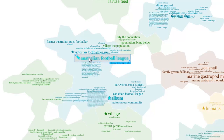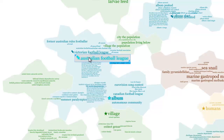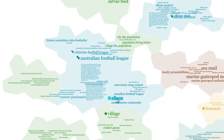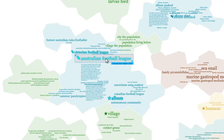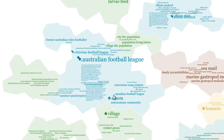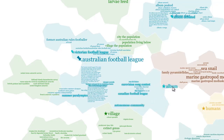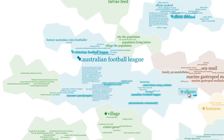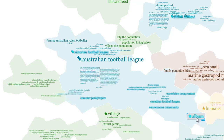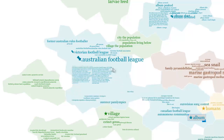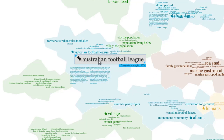Alternatively, dragging terms away from each other decreases the similarity relationship. The user can also change the size of a pinned term, thereby teaching the system about the term's importance in their analysis. The bigger the term gets, the stronger the weight, and the more additional terms appear about the topic. Reducing the size of a term decreases its analytic importance.